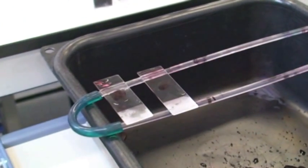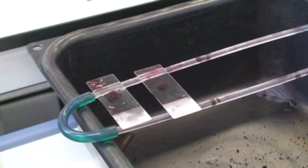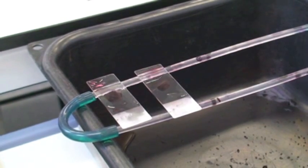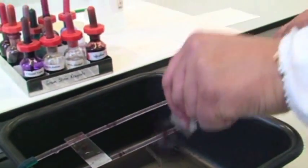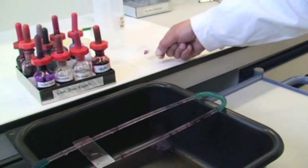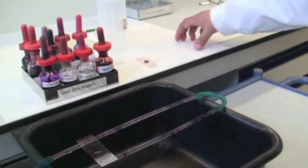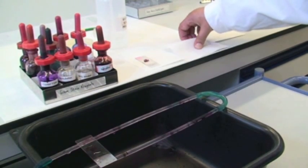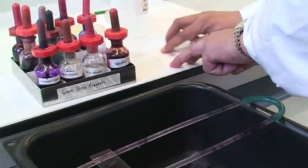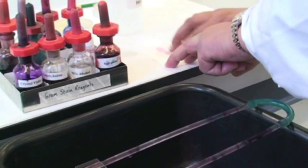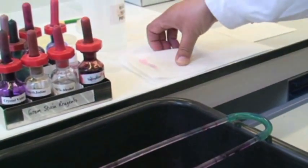Next stage is you'll need to blot dry your slide. So using some blotting paper, take your slide, get rid of any excess, and then pop it onto your blotting paper. And then using a second sheet, popping it on top, and making sure that you've blotted it dry, ready for when you add your oil.